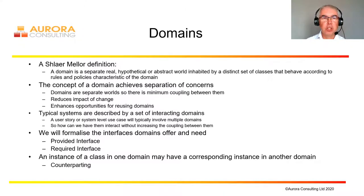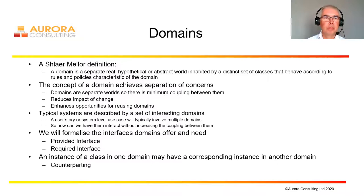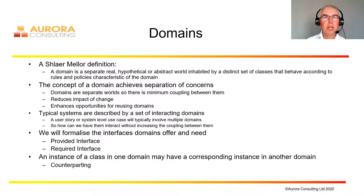However, we can't build systems out of single domains generally. Typical systems are described by sets of interacting domains. A user story or a system lifecycle will usually involve the interaction of multiple domains. So how can we have them interact without increasing the coupling between them? We want to retain the idea of a domain as an encapsulated thing with its subject matter encapsulated and protected. We will formalize the interfaces those domains offer and need, using the UML terminology of provided interface — the set of services a domain makes available to others — and required interface, the set of services the domain will need from others. We'll also look at the idea that a class in one domain will have a counterpart in another domain, down to the instance level.